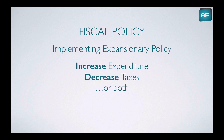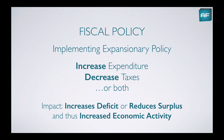So how do we implement an expansionary fiscal policy? We would increase expenditure, or decrease taxes, or both — increasing the deficit or reducing the surplus, and thus increasing economic activity. If the government increases expenditure, it's spending more and this increases economic activity. Or if it decreases taxes while maintaining the same level of expenditure, less money is taken from households and firms, they can continue to spend, and that would also increase economic activity.